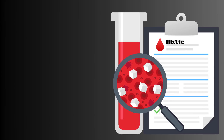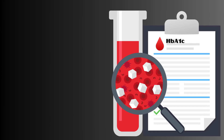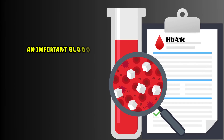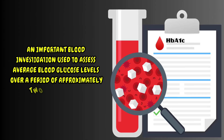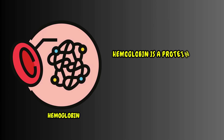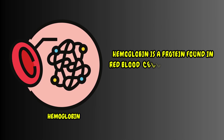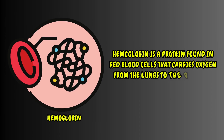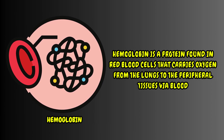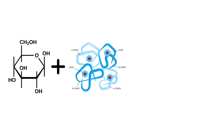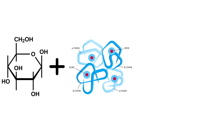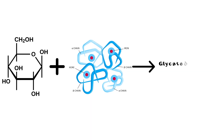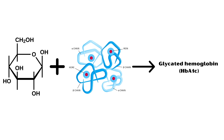Hemoglobin A1c or HbA1c test is an important blood investigation used to assess average blood glucose levels over a period of approximately 2 to 3 months. Hemoglobin is a protein found in red blood cells that carries oxygen from the lungs to the peripheral tissues via blood. When glucose in the bloodstream attaches to hemoglobin, it forms a stable complex called glycated hemoglobin or HbA1c.